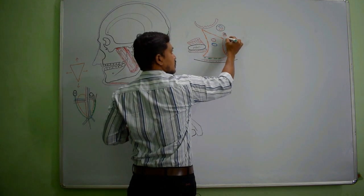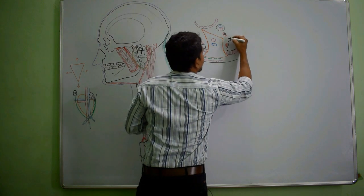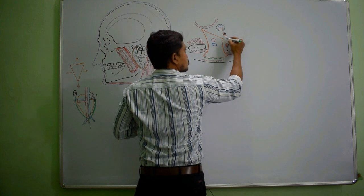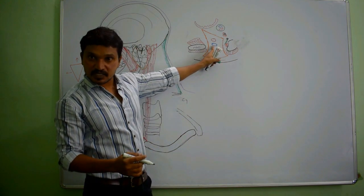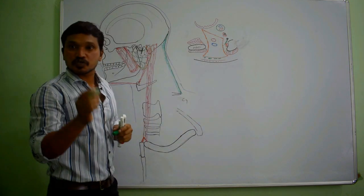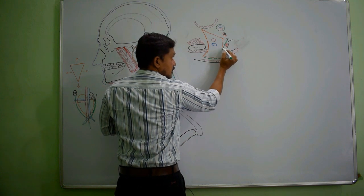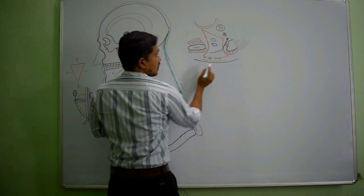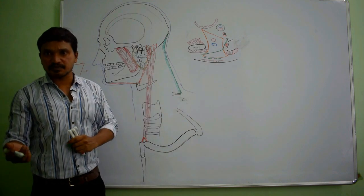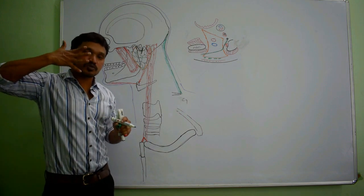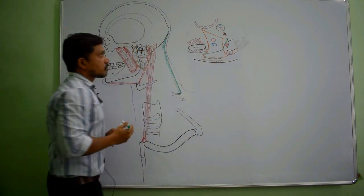From the stylomastoid foramen, the facial nerve emerges out. After emerging, it enters into the substance of the gland through the posteromedial surface. It passes through the substance of the gland and when it reaches the anterior aspect, it comes out through the anteromedial surface. Within the substance of the gland, the facial nerve divides into five branches to supply the muscles of facial expression. These are the structures present in relation with the parotid gland in the transverse section.